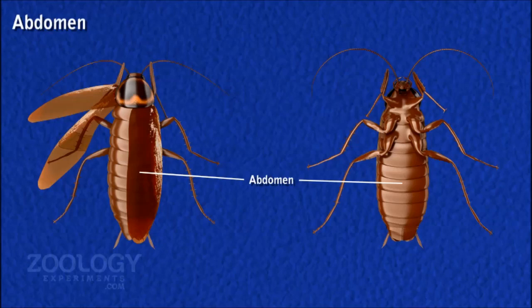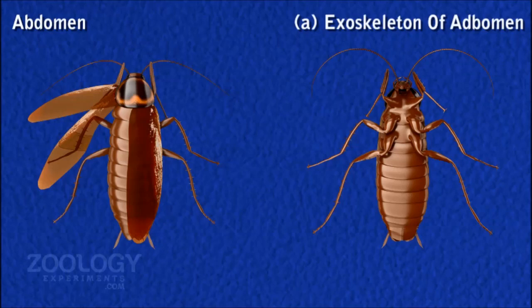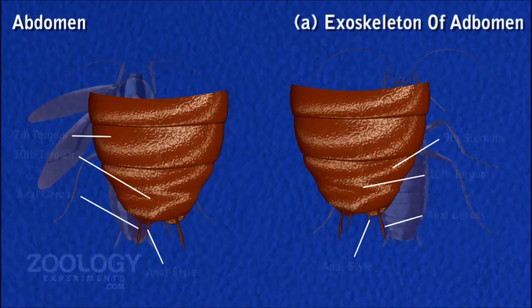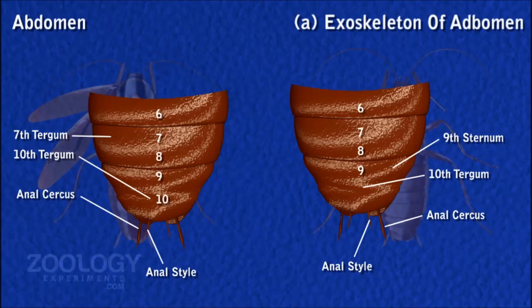The abdomen follows the thorax. The abdomen of an adult consists of 10 segments, though all segments are not visible externally; the hind segments remain somewhat hidden. Eight pairs of spiracles are present on the lateral pleura of the first eight abdominal segments. The exoskeleton of each abdominal segment consists of a dorsal tergum and a ventral sternum, united laterally by a soft cuticle. The tergum of the seventh segment overlaps those of the eighth and ninth segments.